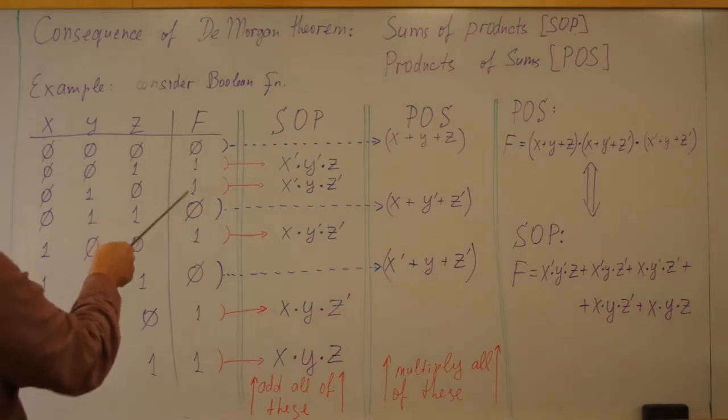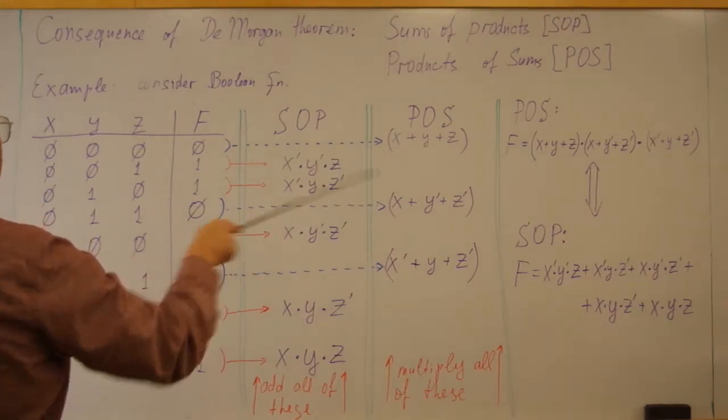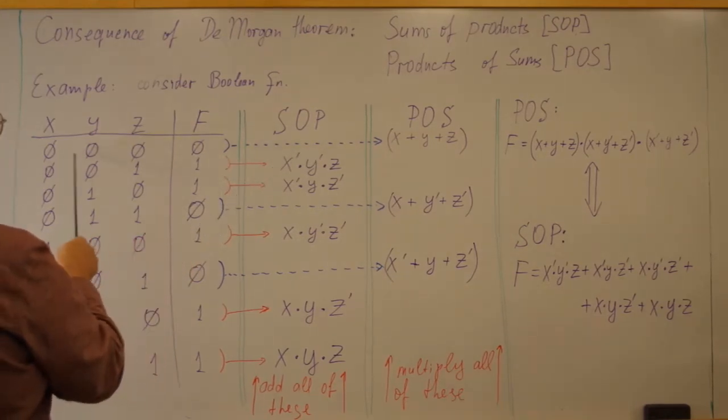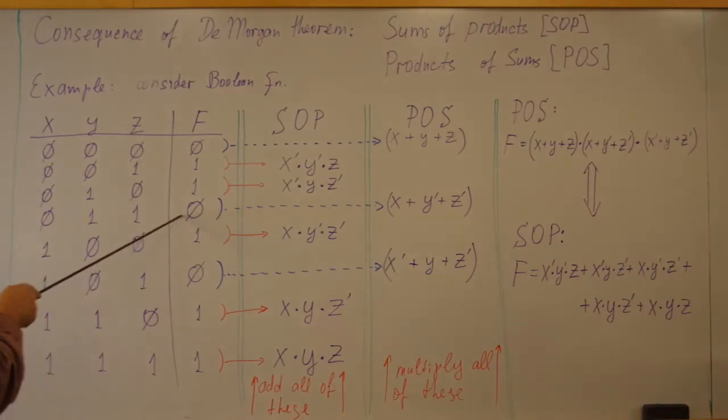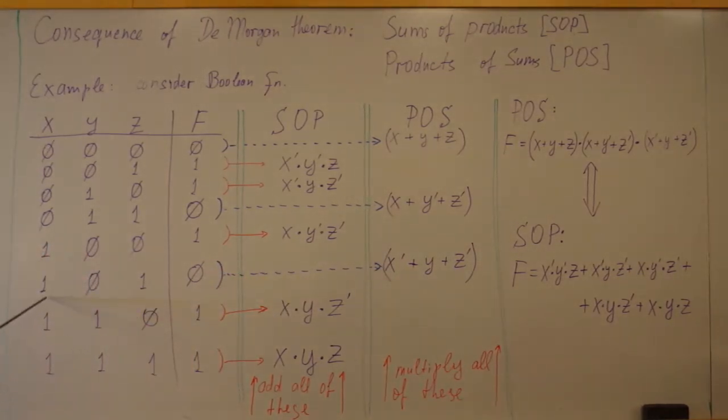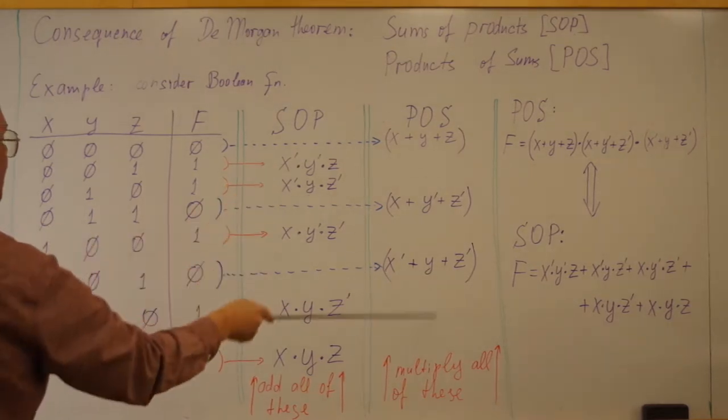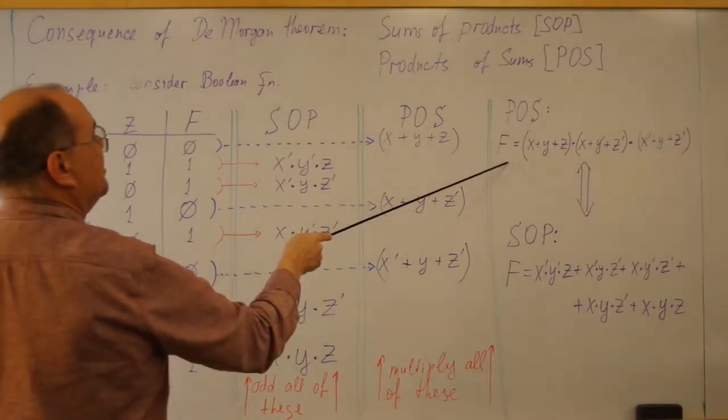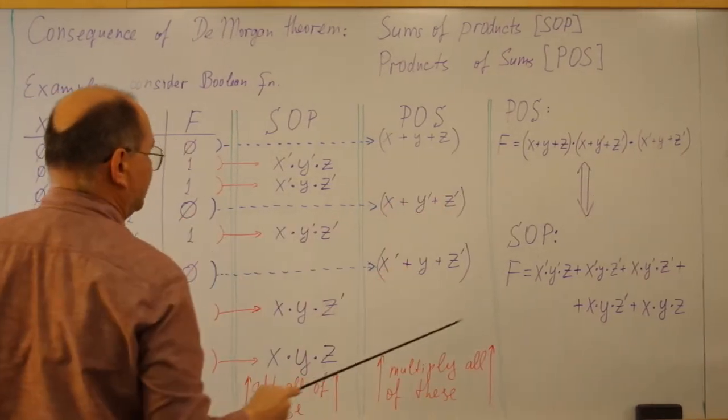Let's do it as a product of sums. For products of sums, we have to look for lines that result in zeros and write them in the form of sums, substituting variables for zeros or inverted variables whenever we see one. For example, first line: Zero, zero, zero produces zero. Zero, zero, zero means X plus Y plus Z. Next line that produces zero is this line: Zero, one, one would mean X plus Y prime plus Z prime. And one more line that produces zero is one, zero, one. It would translate to X prime plus Y plus Z prime. And now we have to multiply all of this. And then we will have representation of our function F in form of the product of sum: F equals X plus Y plus Z times X plus Y prime plus Z prime times X prime plus Y plus Z prime.